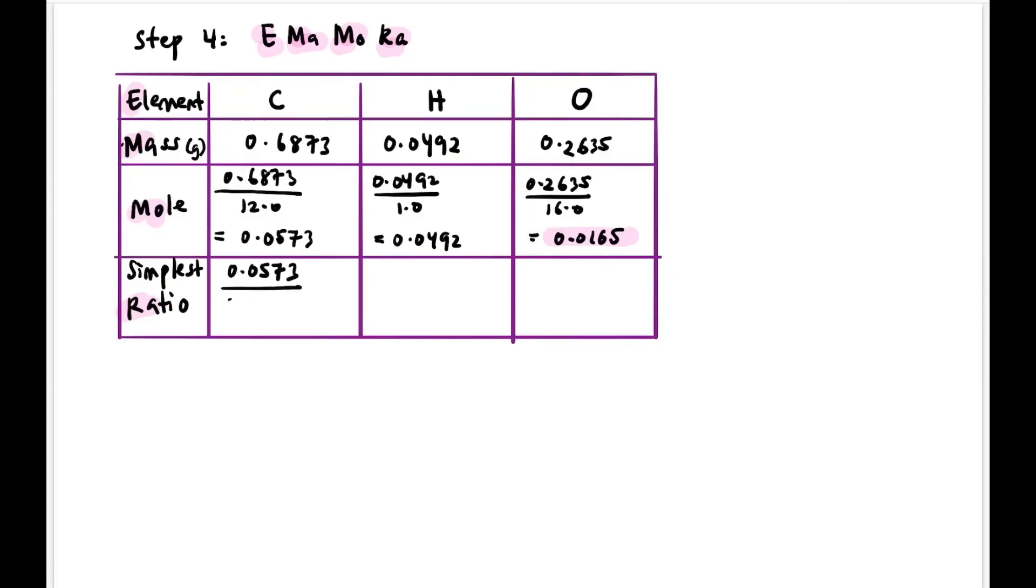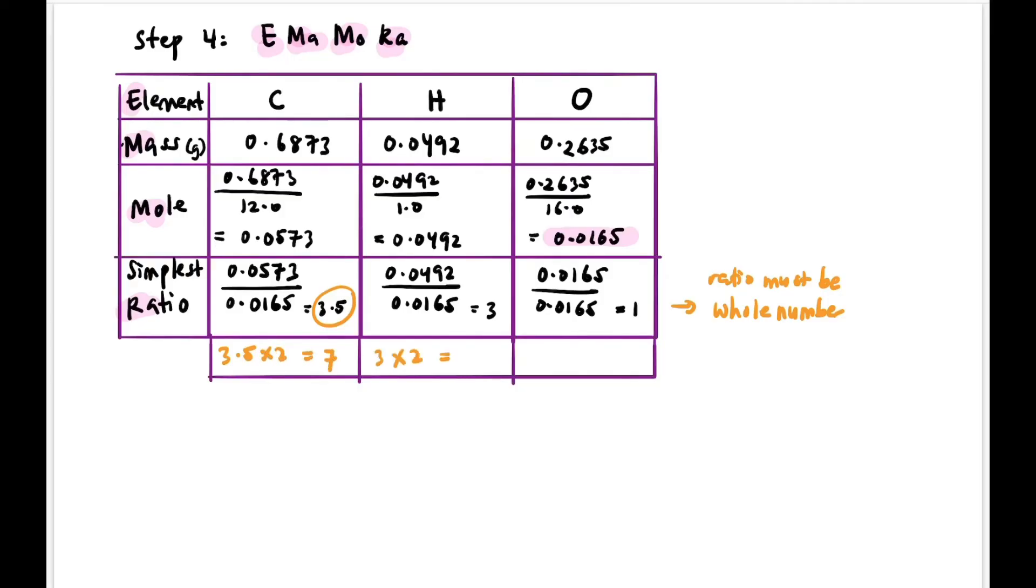As usual, we find the smallest mole value to divide everything by. The smallest is oxygen at 0.0165, so everything must be divided by this. After dividing, we get the ratio for each element: carbon is 3.5, hydrogen is 3, and oxygen is 1. Since we have 3.5, which can't have decimals, the ratio must be a whole number. We multiply by 2 to get the nearest whole number. So 3.5 times 2 is 7, 3 times 2 is 6, and 1 times 2 is 2. The empirical formula for this compound is C7H6O2.